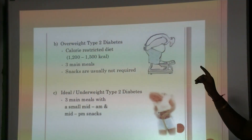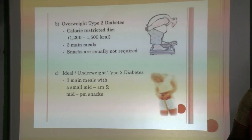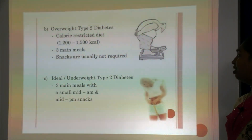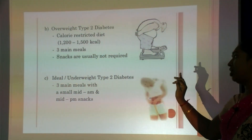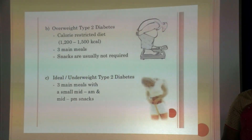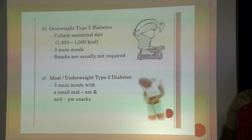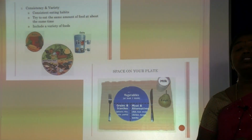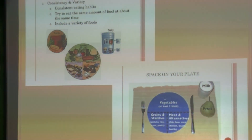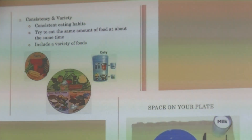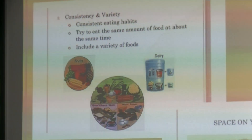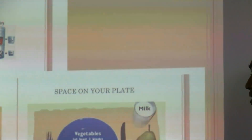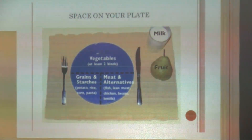When the patient is overweight with Type 2 diabetes, calories should be restricted to 1000–1500 kilocalories with 3 main meals; snacks are not usually required. When the patient is underweight, 3 main meals with small mid-morning snack meals are provided. Consistent eating habits should be followed — eating the same amount of food at the same time and including a variety of food. Half of the plate should contain at least 2 vegetables, with whole grains and lean meat alternatives like fish, chicken and lentils.